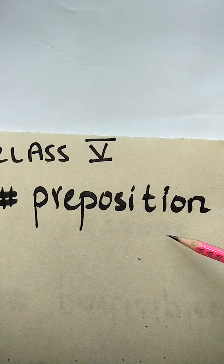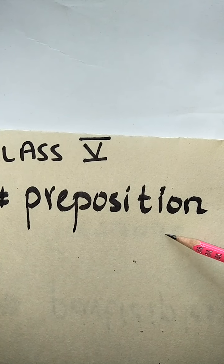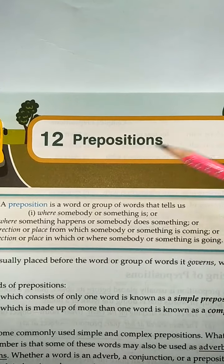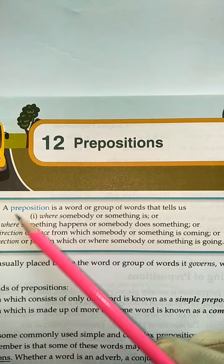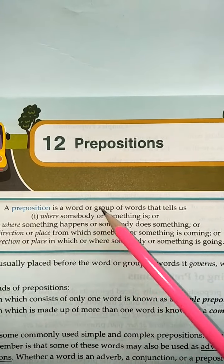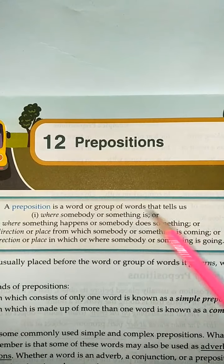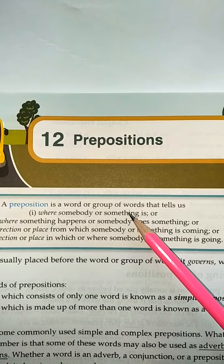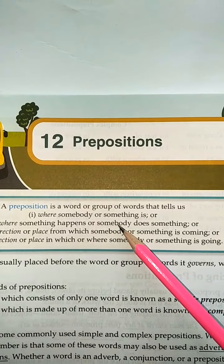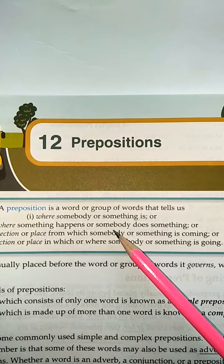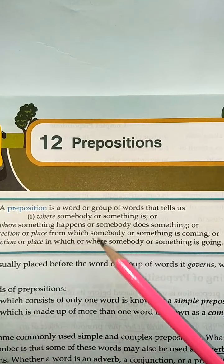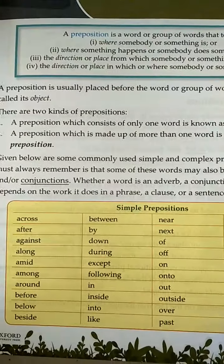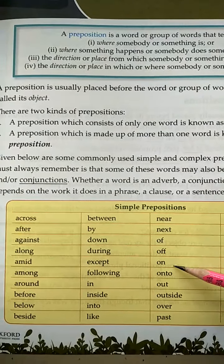Now students, our next topic is preposition. Open page number 59 for this. A preposition is a word or group of words that tell us where somebody or something is. Iska matlab hota hai ke preposition woh word hota hai jo humein batata hai ke kaam kab, kaise aur kyun hua. This is called the preposition.